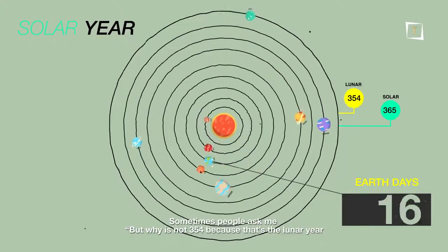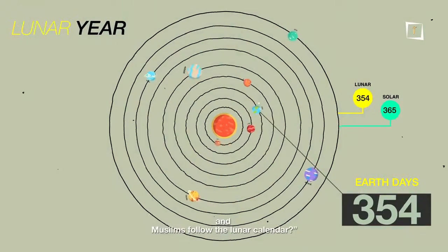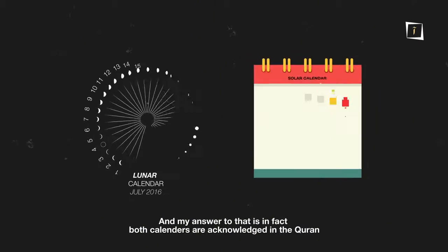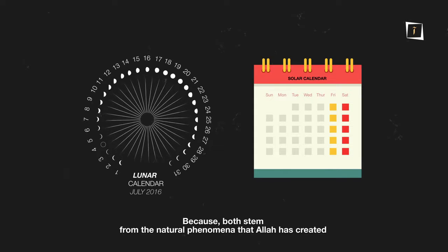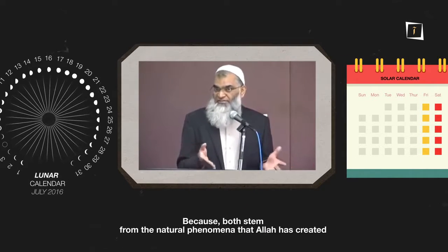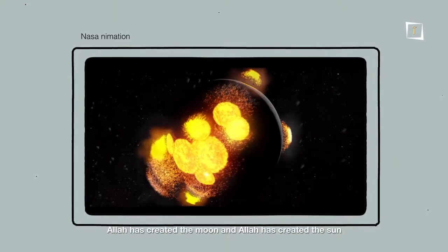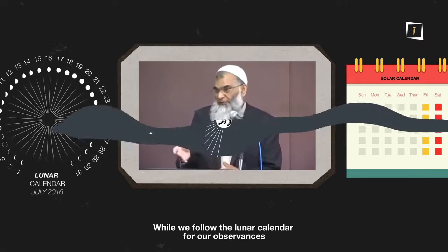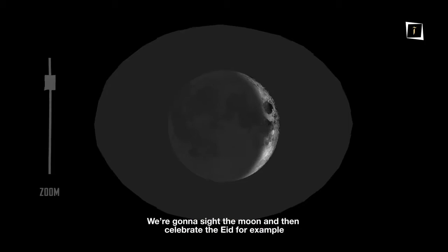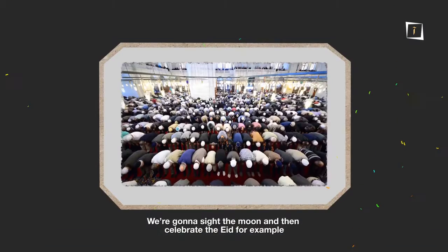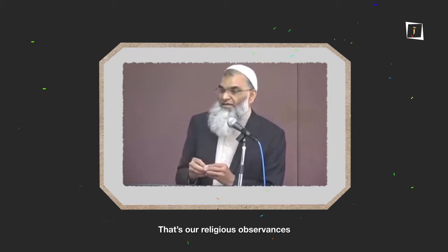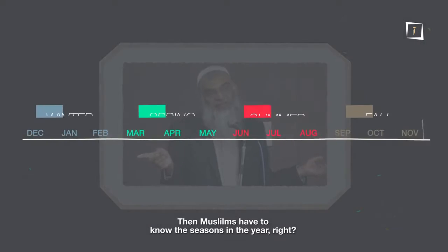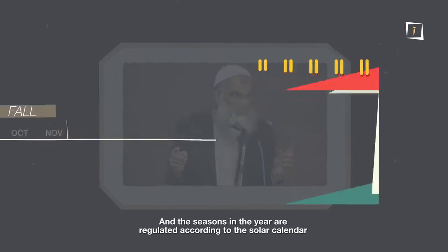Sometimes people ask why it is not 354, since that's a lunar year and Muslims follow the lunar calendar. The answer is that both calendars are acknowledged in the Quran, because both stem from natural phenomena that Allah has created — the moon and the sun. While we follow the lunar calendar for religious observances such as sighting the moon and celebrating Eid, Muslims who farm need to know the seasons, which are regulated by the solar calendar.